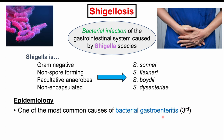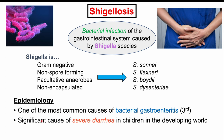Shigellosis is one of the most common causes of bacterial gastroenteritis — it's actually the third most common cause. It is also a significant cause of severe diarrhea in children in the developing world, especially children who are malnourished.